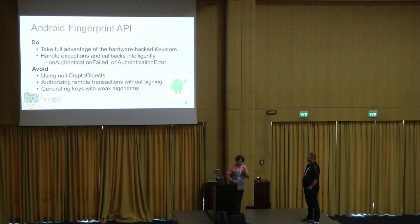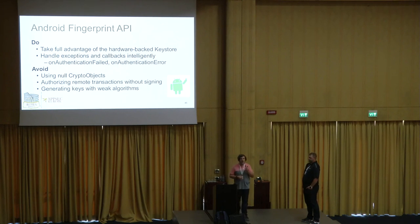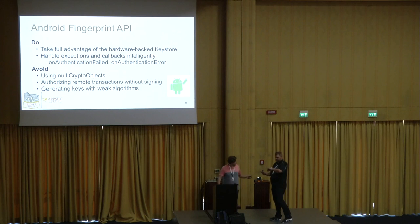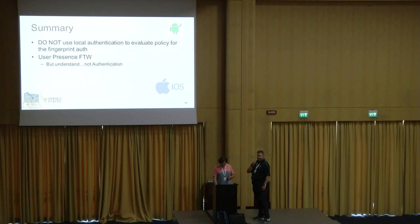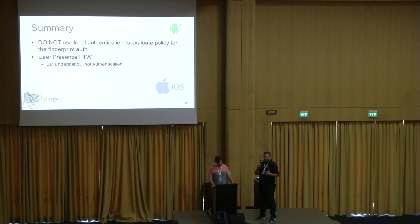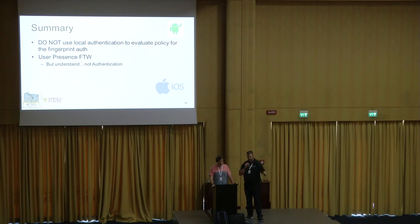On the Android side, I can't stress enough — take advantage of the hardware-backed Keystore. It's there, it's maturing, and Android N introduces key attestation which is really cool. Handle exceptions and callbacks intelligently — if there's a failure, that doesn't mean fail open and let the user into the application. The biggest takeaway: use some sort of user presence, don't use the local authentication mechanisms. Yes, you need a jailbroken device to bypass it, but just use user presence. At the end of the day, this could be a problem for some regulations — it's not authentication, because you can't tell me who actually used their fingerprint.